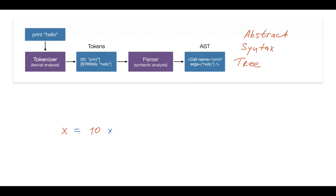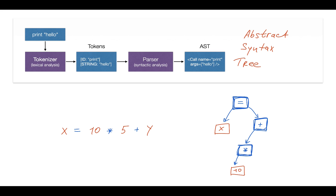Let's see one more AST example. We have the expression x equals 10 times 5 plus y. Abstract syntax trees usually have operators or function names as interior or root nodes. Here we have the assignment operator with a left-hand side and right-hand side. The right-hand side is a complex expression itself — a plus operator with its own left-hand side (multiplication) and right-hand side (identifier y). So the purpose of the parser is to translate this string into this tree, which can then be passed to a code generator or interpreter.